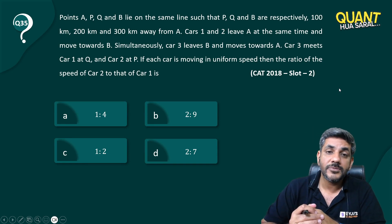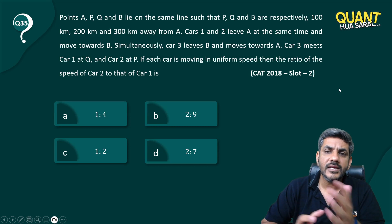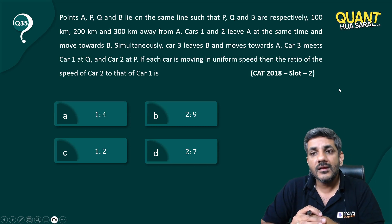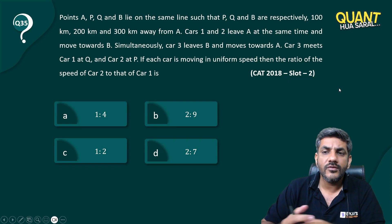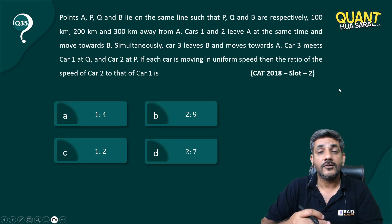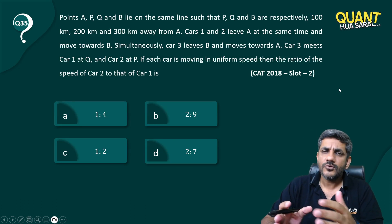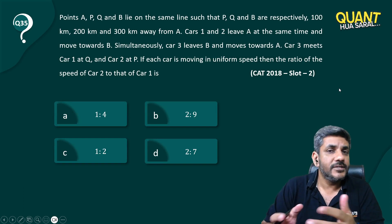Simultaneously, car 3 leaves B and moves towards A. Car 3 meets car 1 at Q and car 2 at P. Each car is moving at uniform speed. What is the ratio of speed of car 2 to car 1? I've told you before that for an aptitude solution or logical solution, visualization is extremely important.